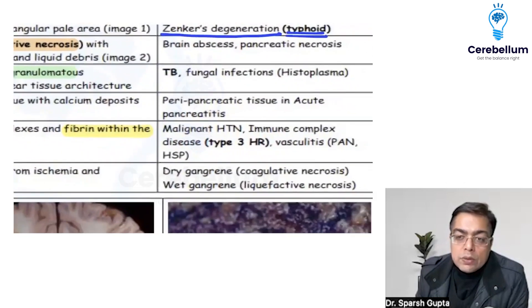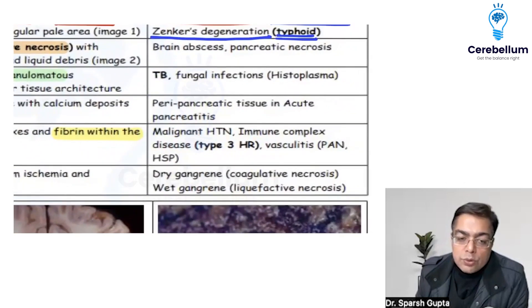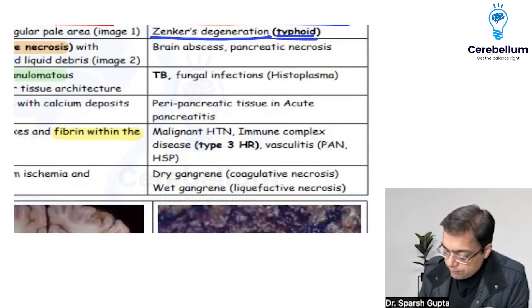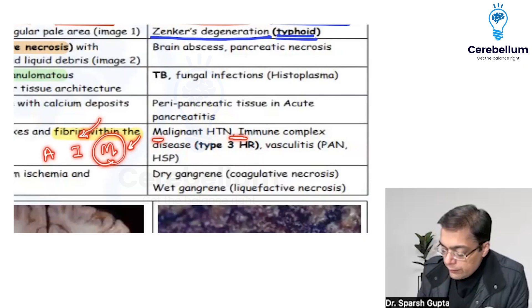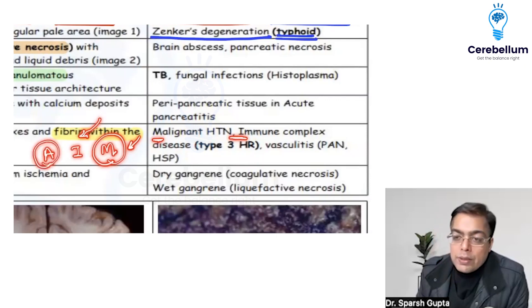Immune complexes get deposited when there is an endothelial cell injury. To remember the examples, your aim is to crack the exam — so we use the mnemonic AIM: M for malignant hypertension, I for immune complex disease, and A for Aschoff's body.